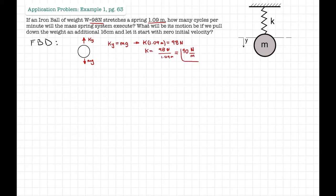Now we need the mass. Since weight equals mass times gravity: m = W/g = 98 / 9.81 ≈ 10 kilograms.